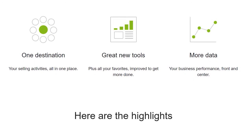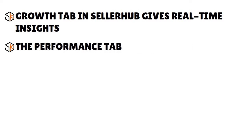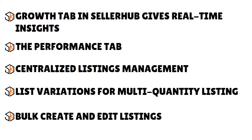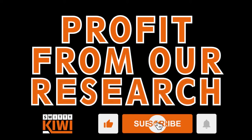You have a growth tab that gives you real-time insights, sourcing guidance, restock advice, and listing improvements. In-depth sales data helps you know how buyers are finding products and identify top performers. You have a performance tab, centralized listing management, variation support for multi-quantity listings, and bulk create and edit. In terms of pricing, this software is free — you only need to pay for subscriptions like Selling Manager Pro or eBay Stores.